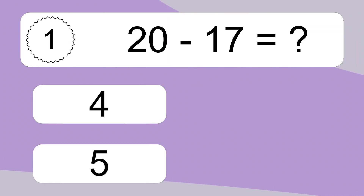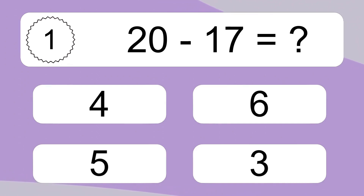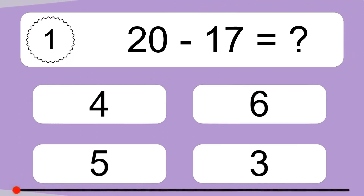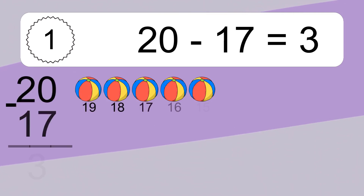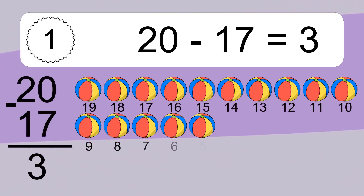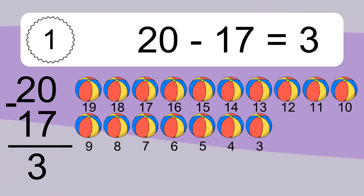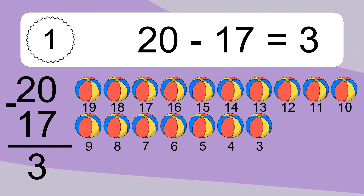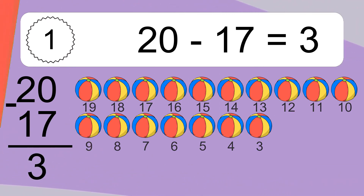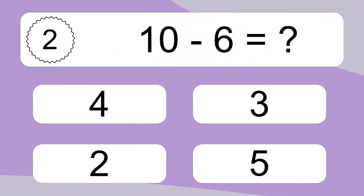20 minus 17 equals what? 20 minus 17 equals 3. Let's count it: 19, 18, 17, 16, 15, 14, 13, 12, 11, 10, 9, 8, 7, 6, 5, 4, 3.